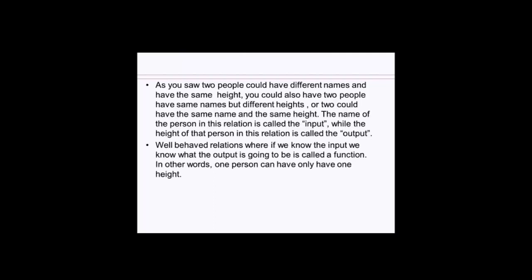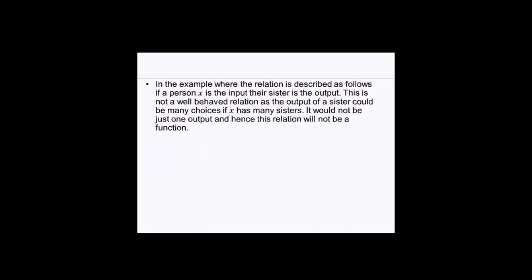Well-behaved relations, where if we know what the input is, allows us to see what the output is, is called a function. In other words, for one input, there is only one output. So in other words, one person can only have one height at a time. Can't have two heights in the same moment for that person, so that would be a function.